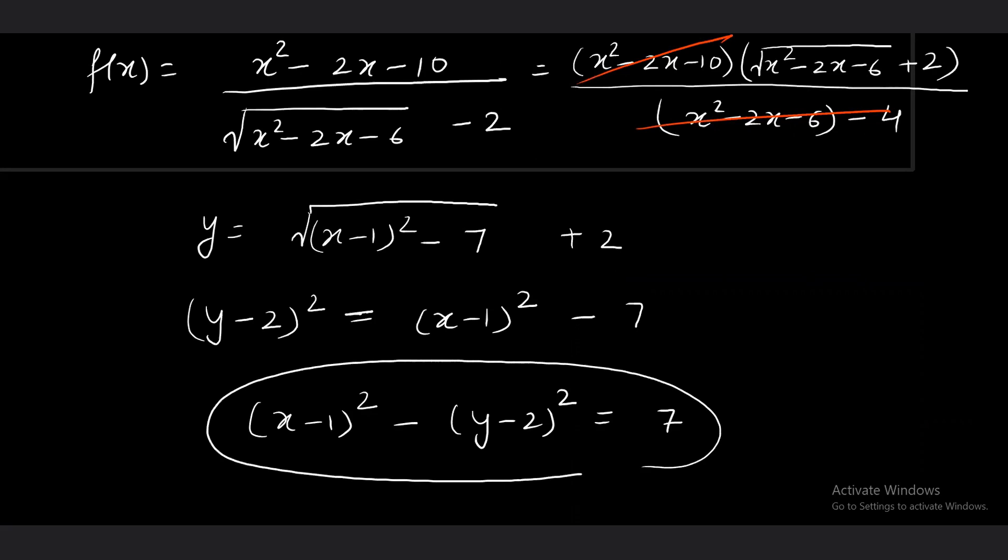(y - 2)^2. This is equals to (x - 1)^2 minus 7. In fact, notice this point. It is (x - 1)^2 minus (y - 2)^2 equals 7. So, basically, this curve is nothing but a standard hyperbola having center at (1, 2).